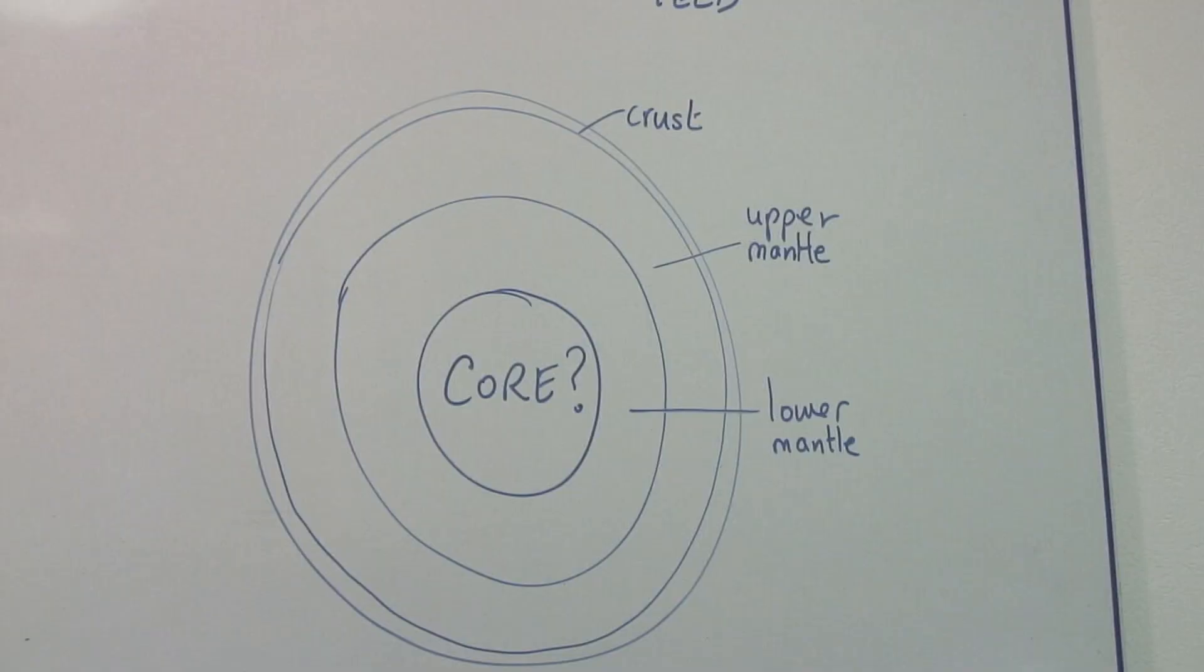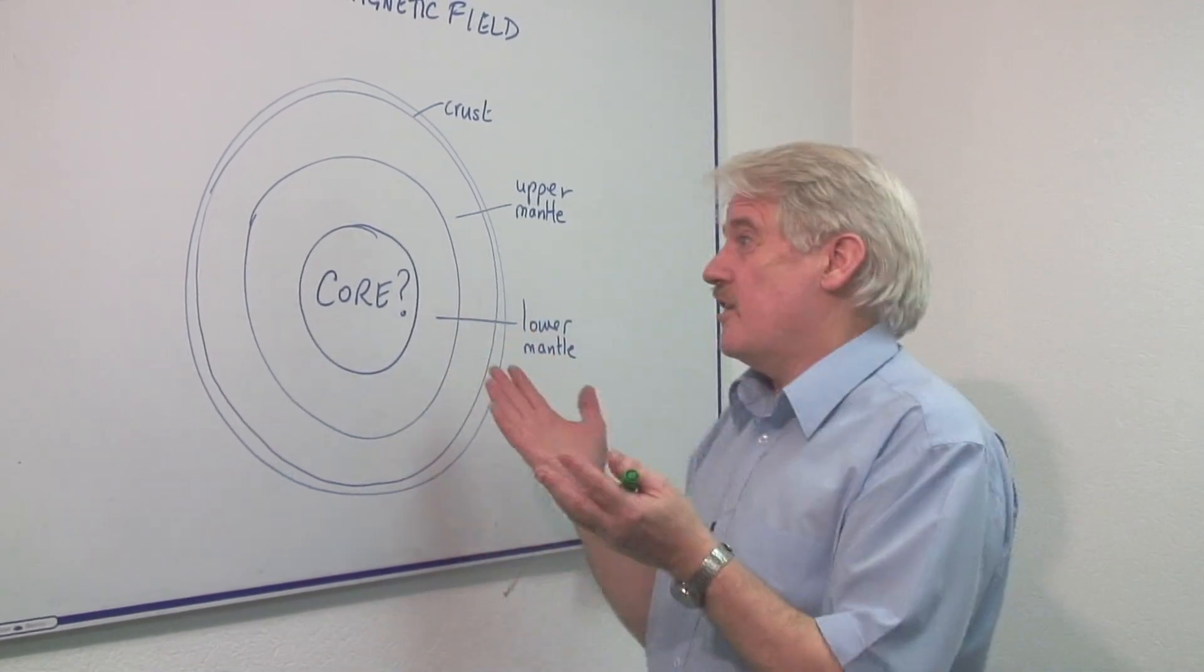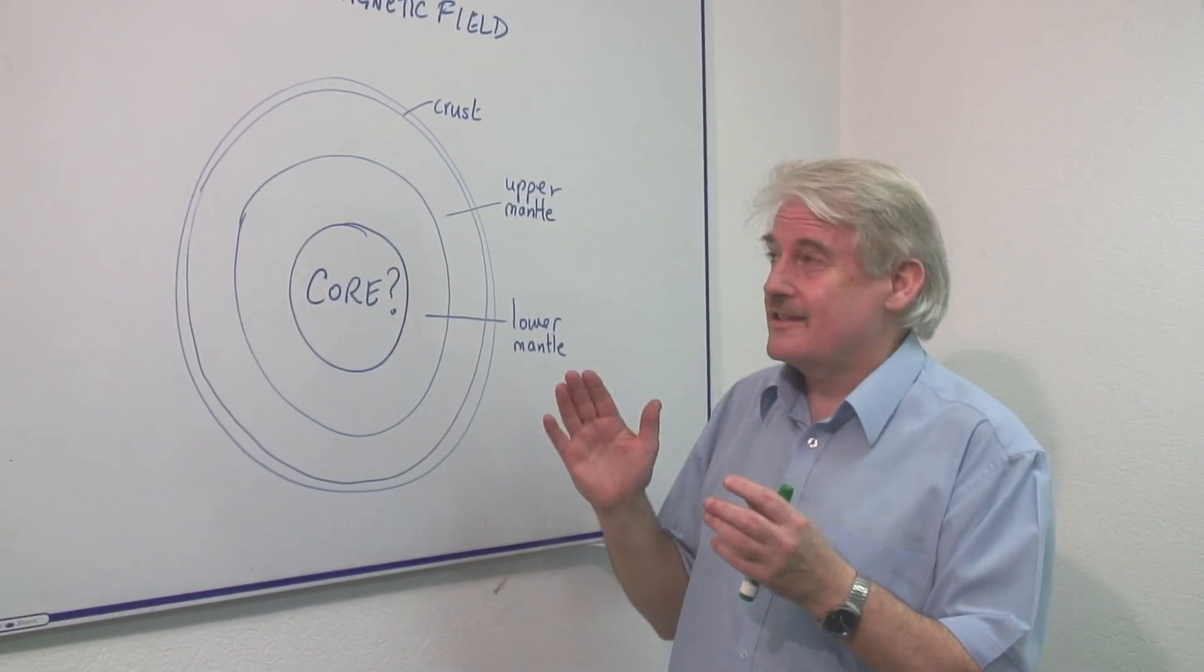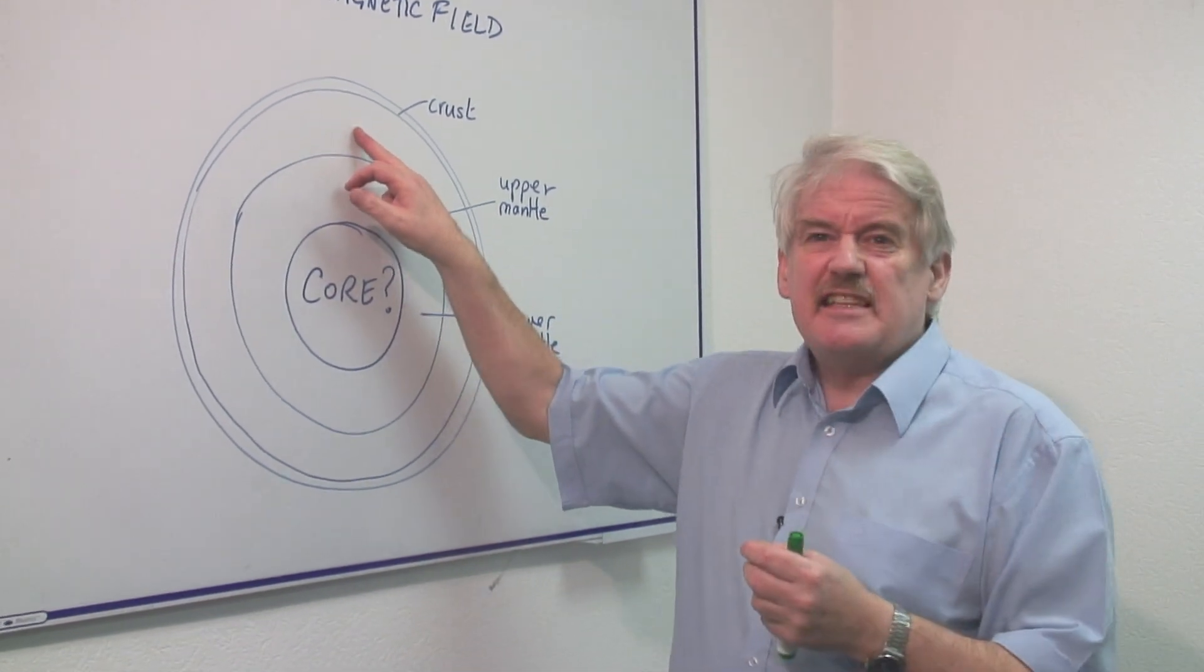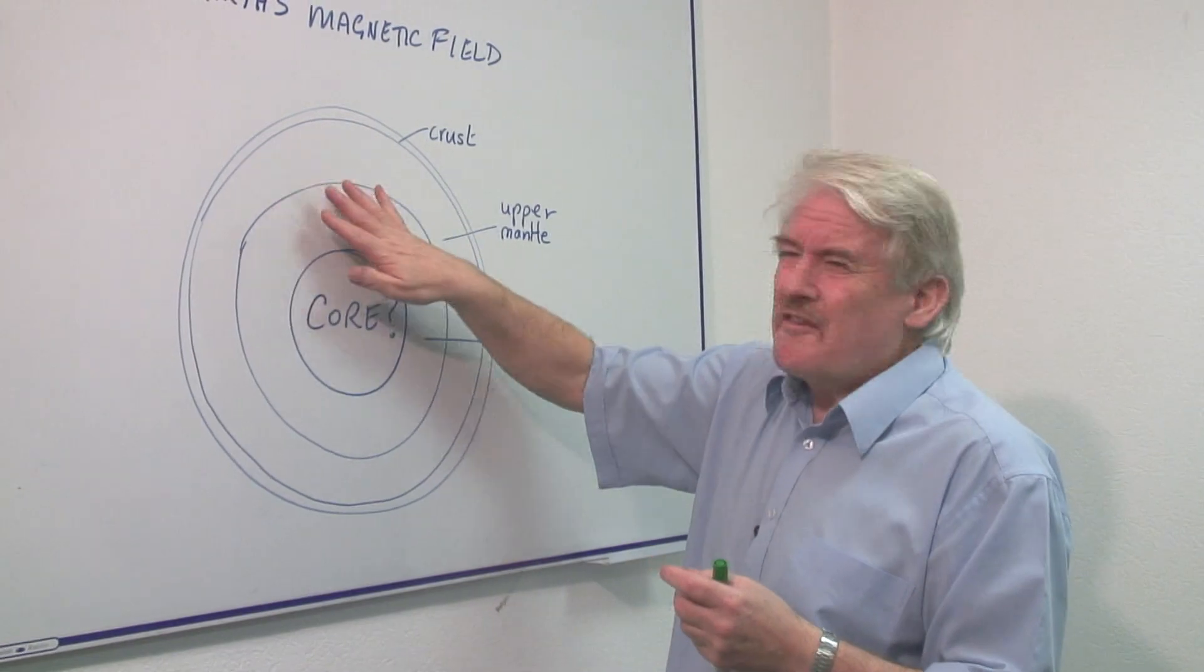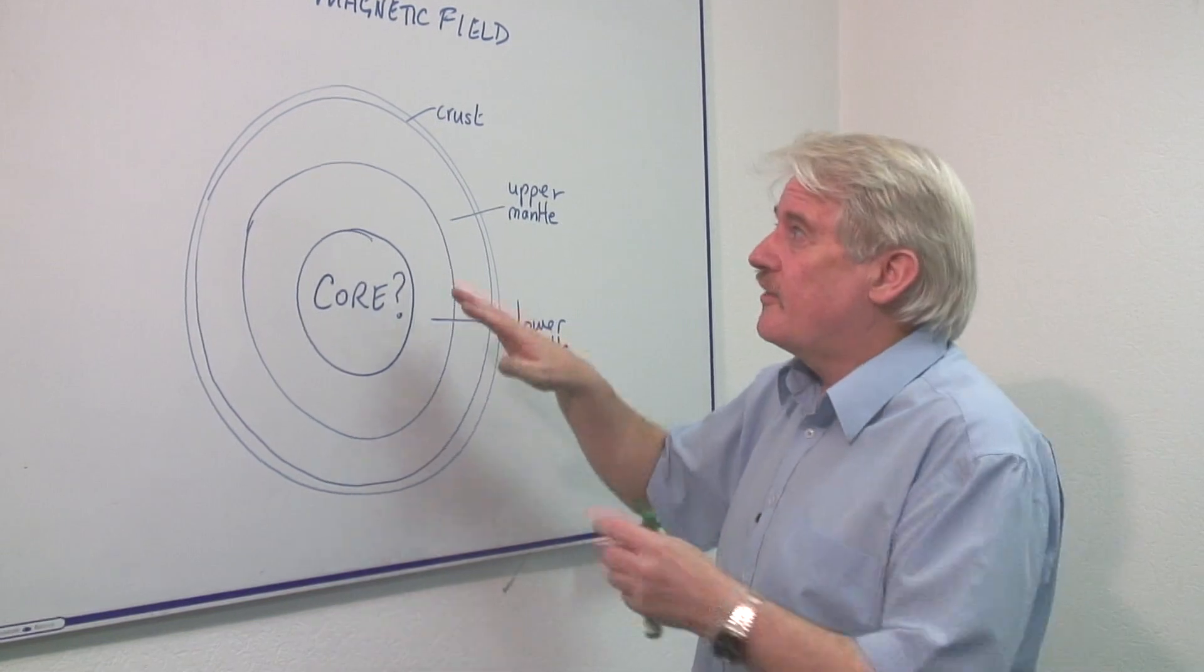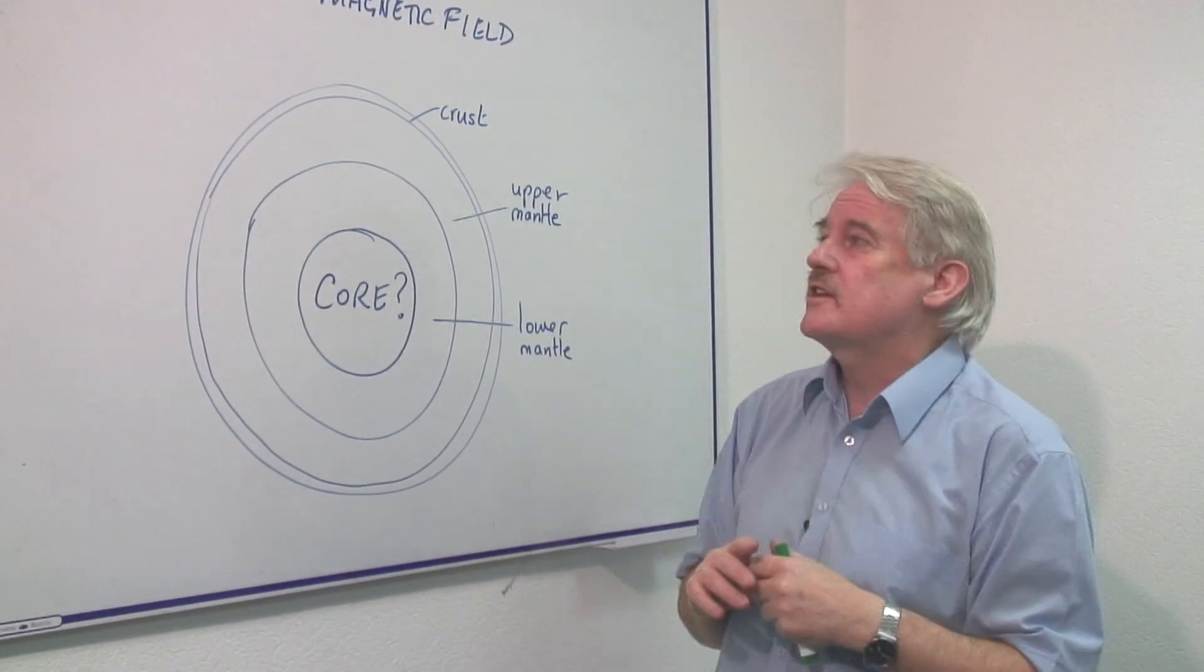Underneath this, people often think that there is a molten area. Well, that is certainly not the case. This is not molten. It's not a liquid. It is a very sticky solid. It moves very slowly. And that's what causes the fractures in the surface and volcanoes and things like that.